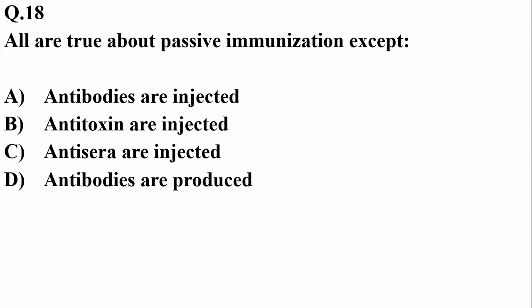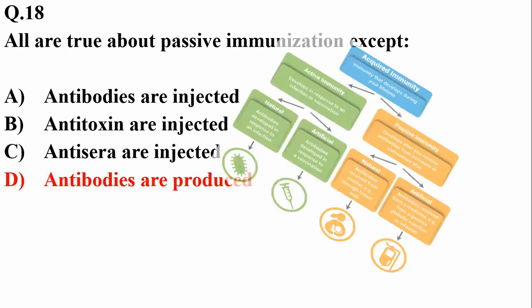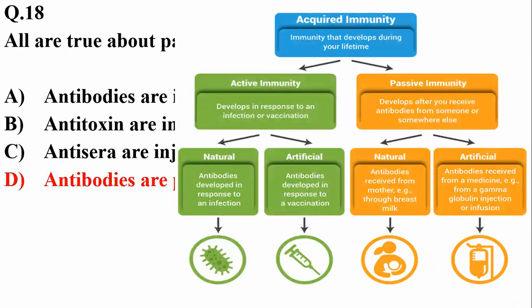Question 18: all are true about passive immunization except production of antibodies is not stimulated. Passive immunization includes antibodies and may involve injection of anti-sera or anti-toxins. Antibodies are not produced — they are already made and present in a serum that is injected. Passive immunity may be natural, such as gain of antibodies from the mother through placenta or breast milk, or artificial, involving injection of antibodies.